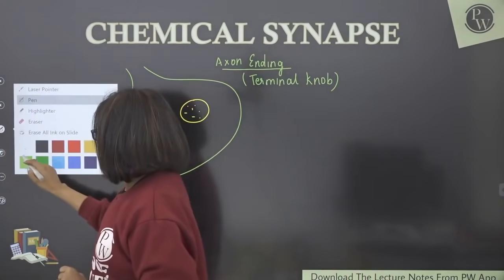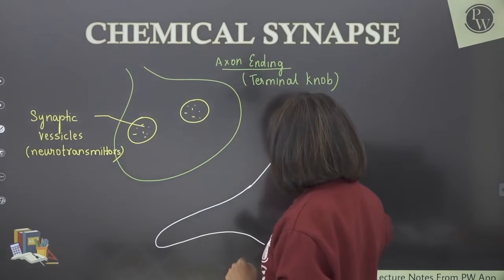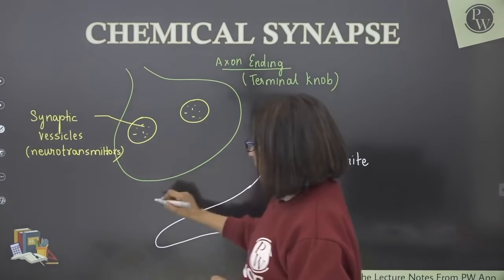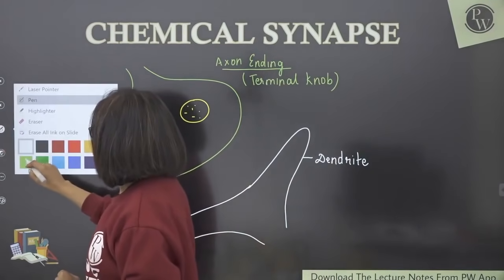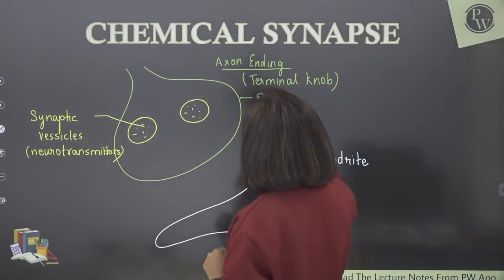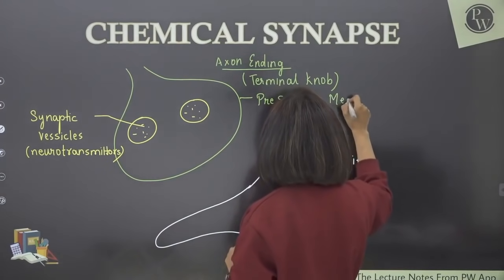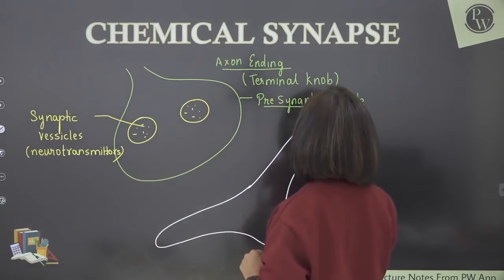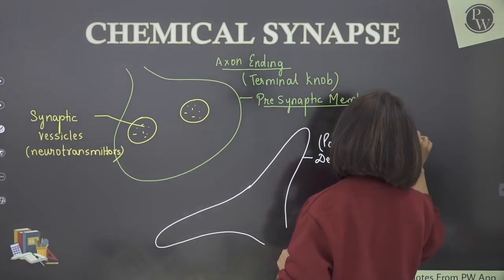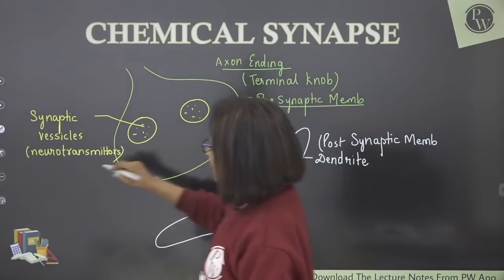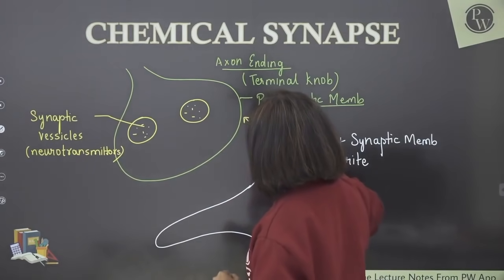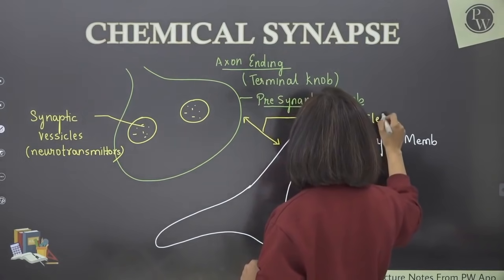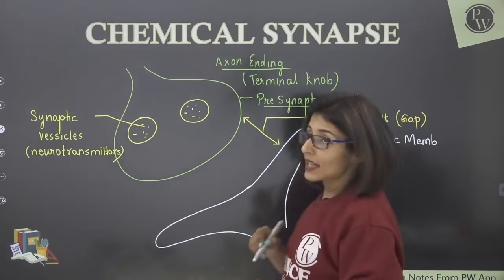Let's draw the structure. The second neuron's dendrite faces the first. This is the pre-synaptic membrane — the terminal knob membrane. The dendrite of the next neuron is the post-synaptic membrane. The gap between the two neurons is known as the synaptic cleft. Cleft means gap.